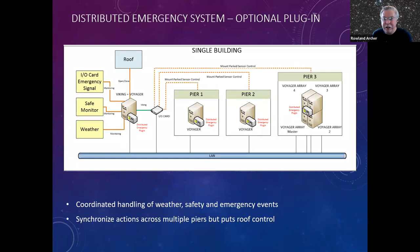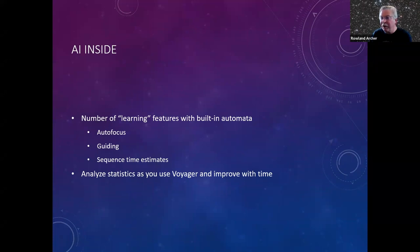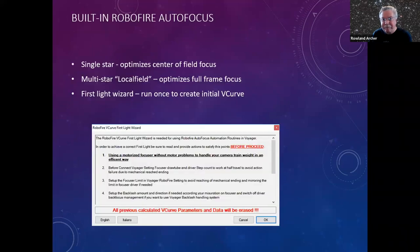There's a recent optional plug-in where if you have an observatory with multiple piers, event handling can be centralized in one system and signals sent to the other systems running Voyager — so you don't have the problem of each system trying to control the roof independently. One of the reasons Voyager runs so well and is so reliable is it has quite a bit of AI automation built in — it will learn from autofocus and guiding experience, keep statistics, and things improve with time.